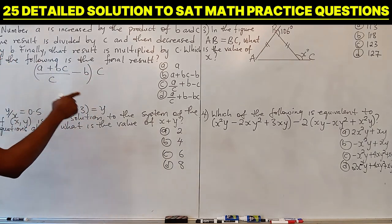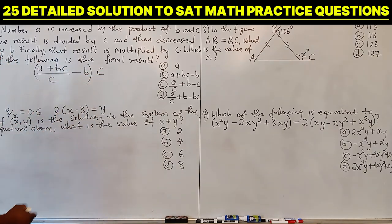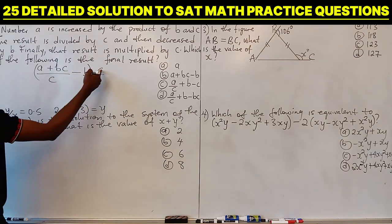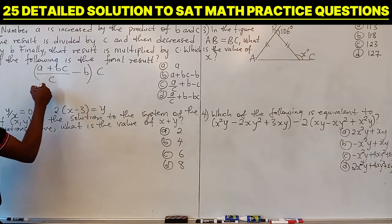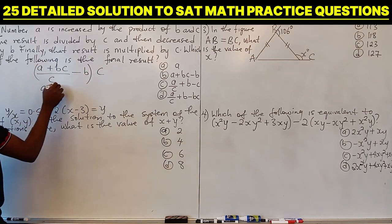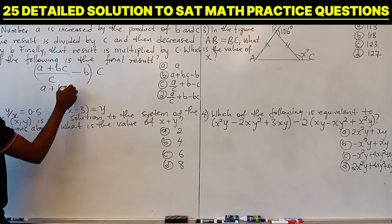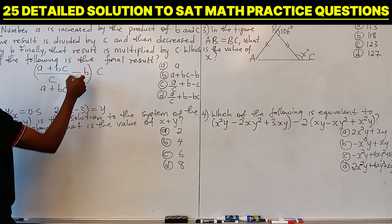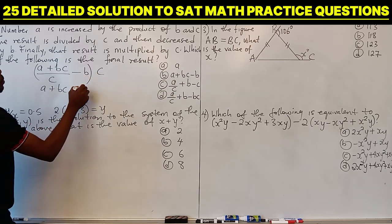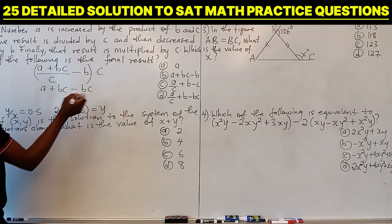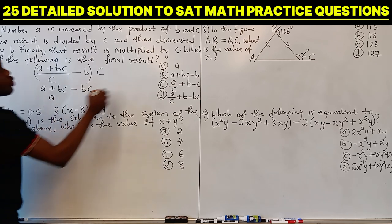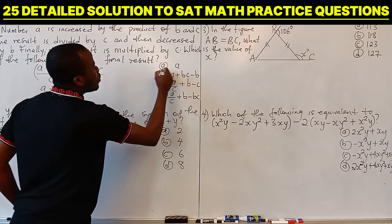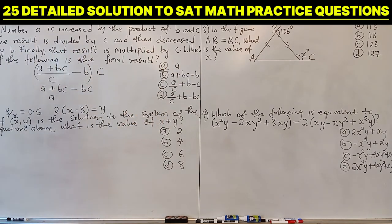Which of the following is the final result? If we open the bracket and multiply by C, we cancel the C and are left with A plus BC. Then this multiplied gives minus BC, and BC minus BC is zero, so we are left with A. The correct option is A.